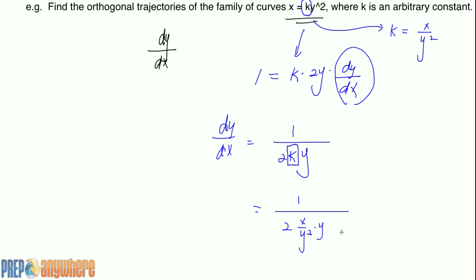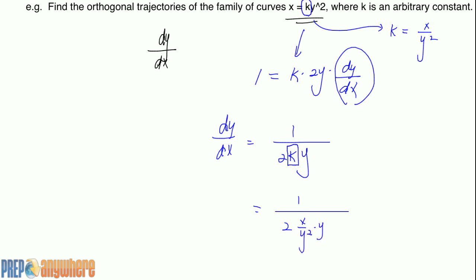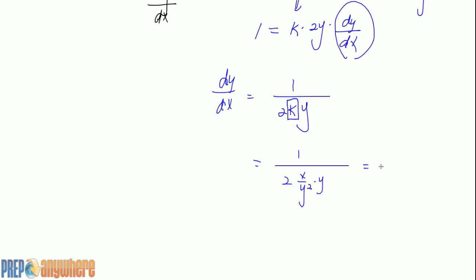So we can replace k with x over y squared times y. Simplifying, 1 over 2xy, which is y over 2x. That's dy/dx.